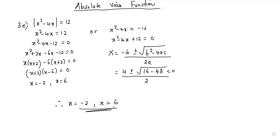In case you are confused, what we have is 4 plus or minus root of negative 32 over 2. We don't know the root of a negative number — it's complex, and here we're dealing with real numbers only. This is also how you solve part f: you create the positive and negative cases and then solve the quadratic.